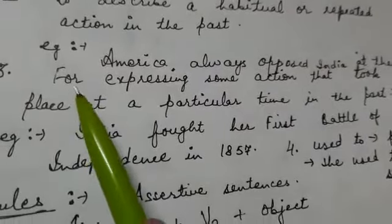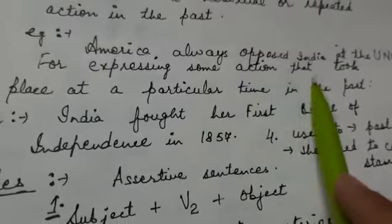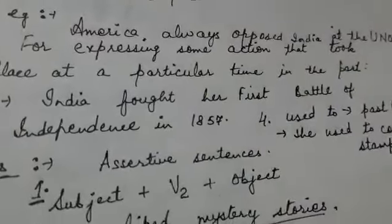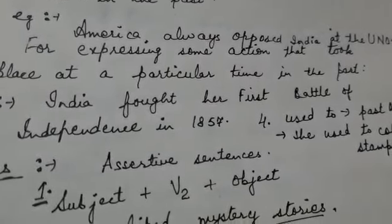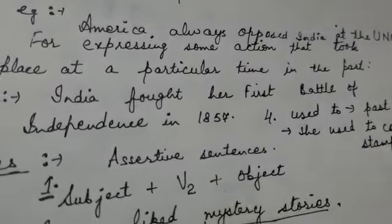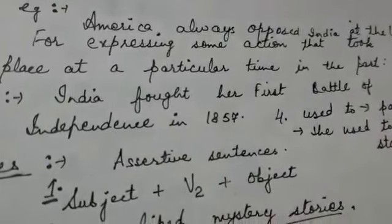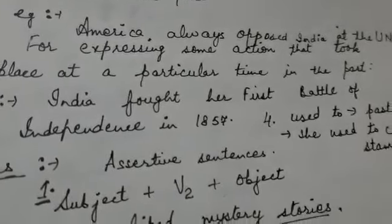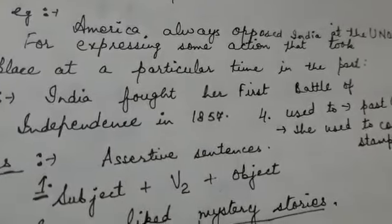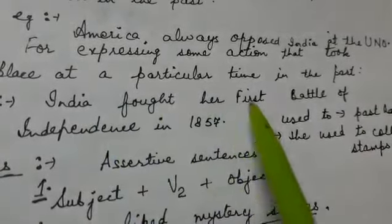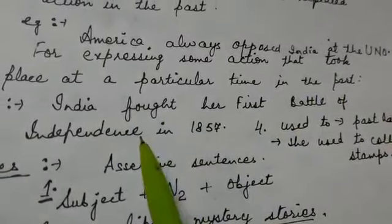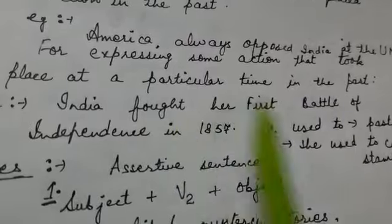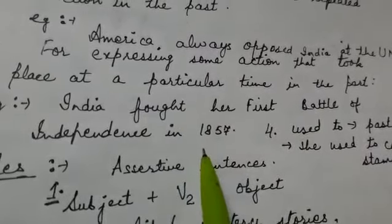Next is for expressing some action that took place at a particular time in the past. Un actions ke liye jo past mein kisi particular time pe complete hoi hon. For example, 'India fought her first battle of independence in 1857.' India ne apni azadi ki pehli battle 1857 mein ladi thi.